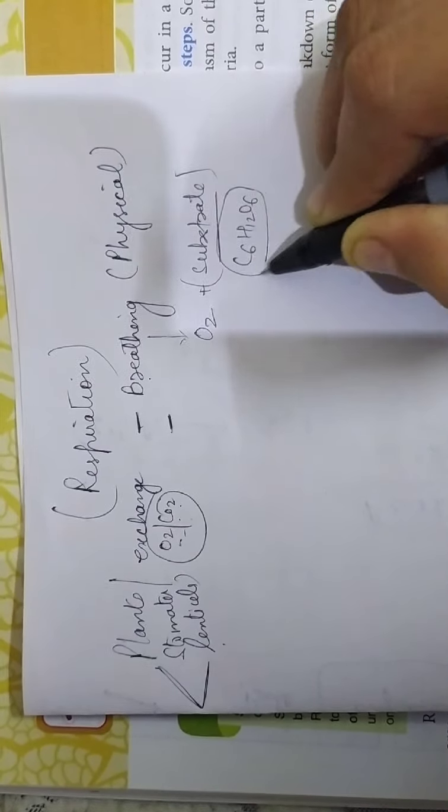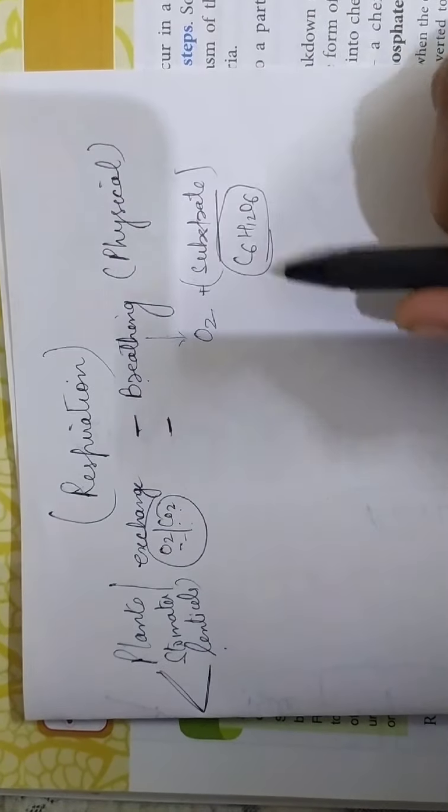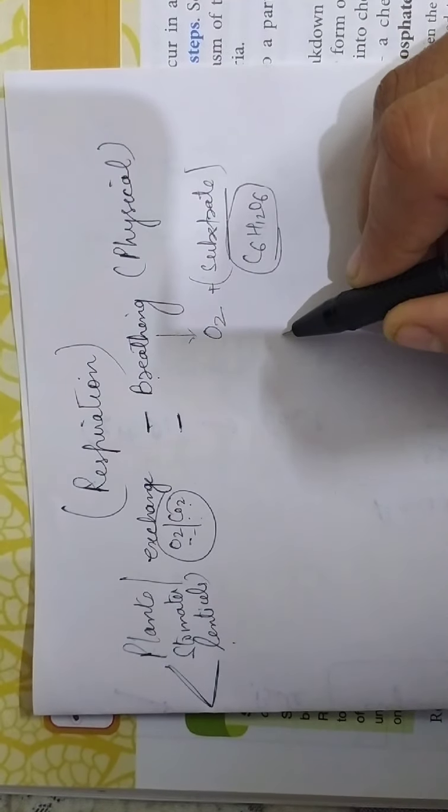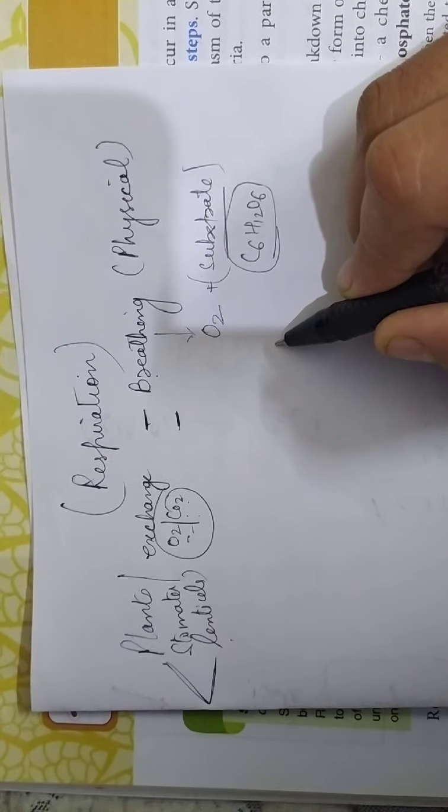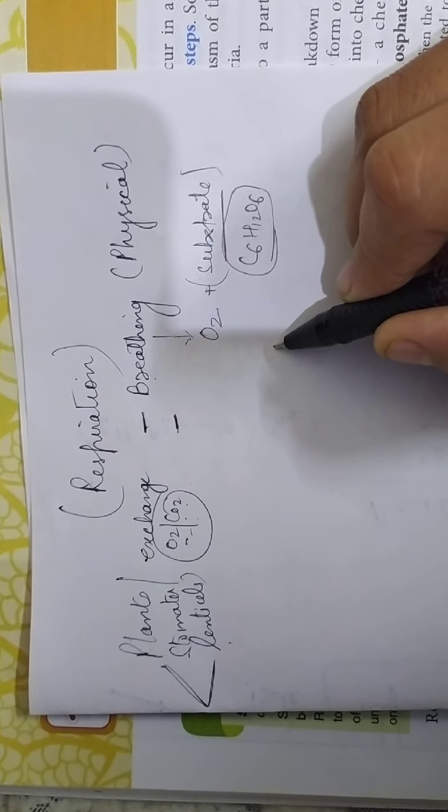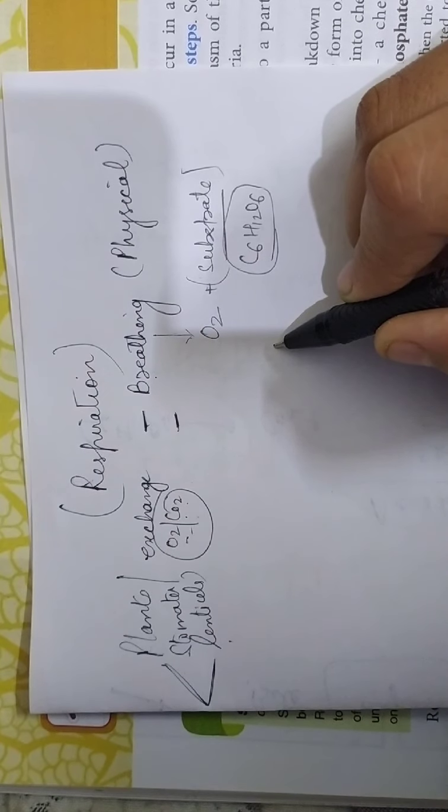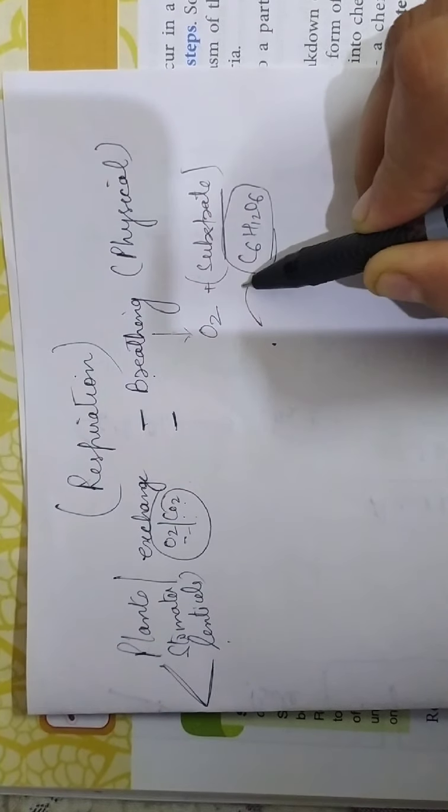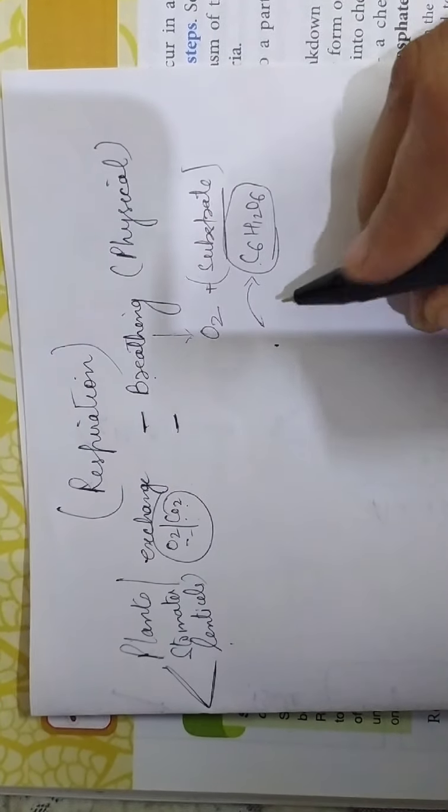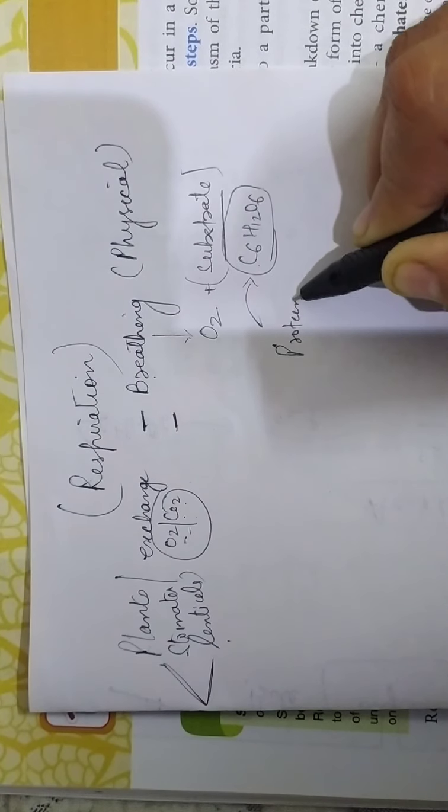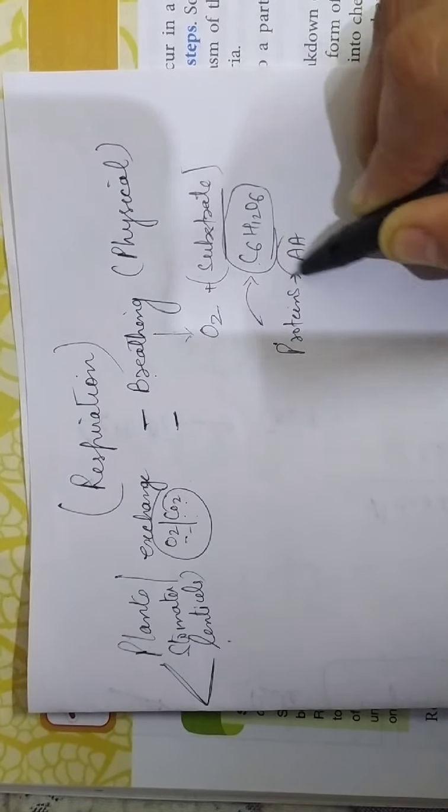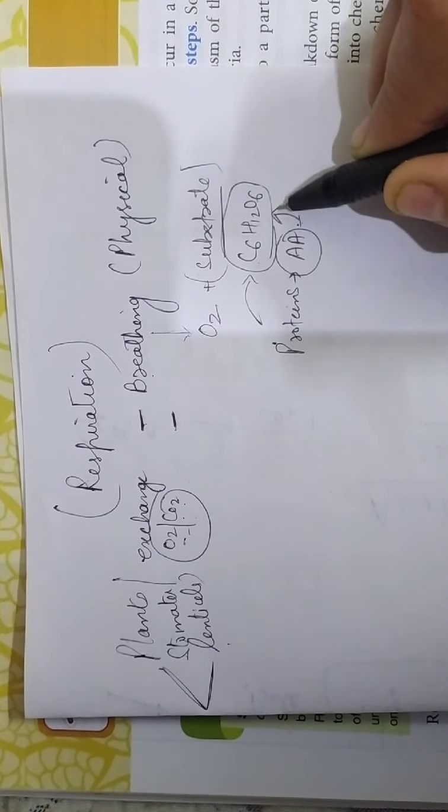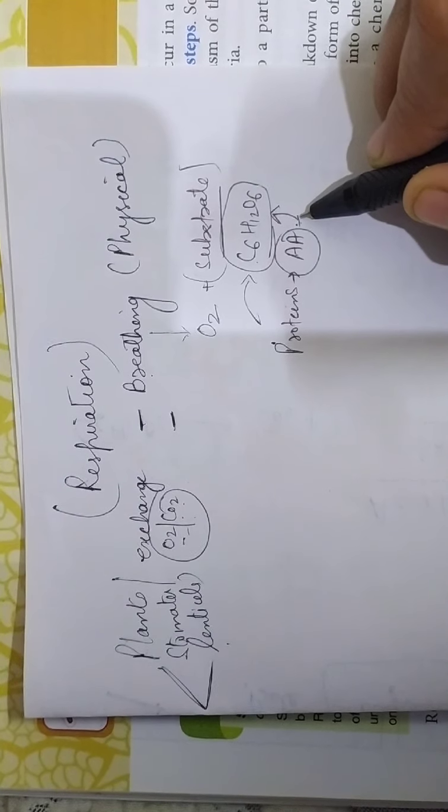It is basically in the form of glucose but it is not necessary that it will be glucose always. If glucose is not available then the fatty acids and glycerol from fat breakdown may get converted into glucose. And if fats are also not available then proteins break down into amino acids.